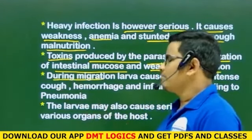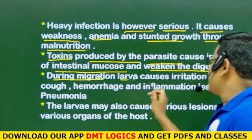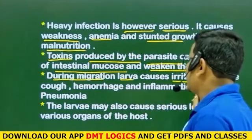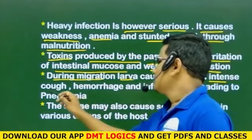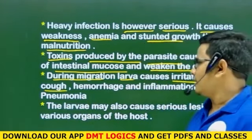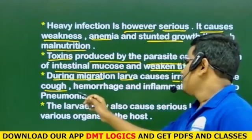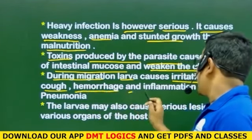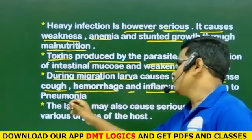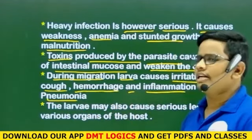During migration, the larvae cause intense irritation and coughing. This leads to hemorrhage and inflammation, which can result in pneumonia.